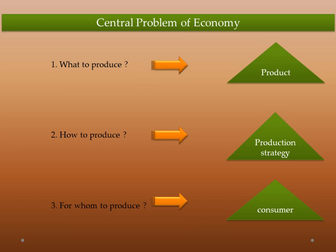The second question, how to produce, is related to production strategy. There are two types of strategies: traditional strategy and modern strategy. The economy will decide whether to use a labor-intensive technique or a capital-intensive technique, depending on the available resources in the economy and the budget of the producers.